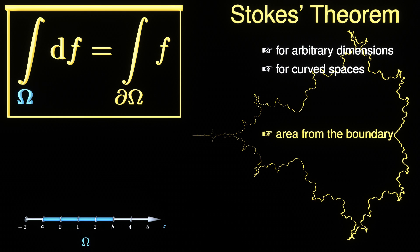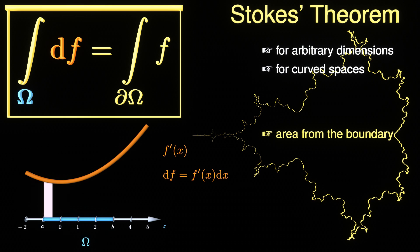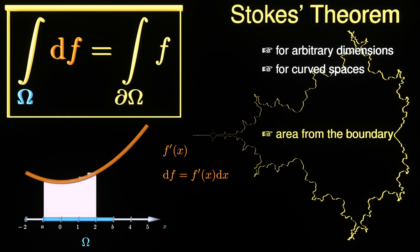The notation df for a function of one variable can be written as its derivative combined with the differential of the independent variable. The symbol ∂Ω refers to the boundary of omega, which in the case of an interval on the real axis is just the start and the end point of this interval.